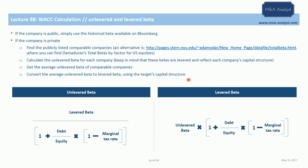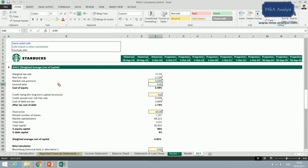You can see the formulas here to convert beta figures from one form to the other. This is how you find the unlevered beta from the levered beta, and this is how you find the levered beta from the unlevered beta. It simply takes into account the capital structure of the company and the tax effect. Starbucks Corporation is a public company, so we have the levered beta directly.